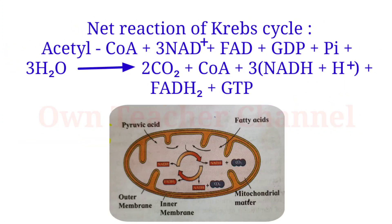The reaction of the Krebs cycle: Acetyl-CoA + 3 NAD⁺ + FAD + GDP + Pi + 3 H₂O → 2 CO₂ + CoA + 3 NADH + H⁺ + FADH₂ + GTP. During the Krebs cycle, NAD is converted to NADH2, FAD is converted to FADH2, and GDP is converted into GTP. Remember: ATP stands for adenosine triphosphate, FADH2 means flavin adenine dinucleotide, and NADH2 means nicotinamide adenine dinucleotide.